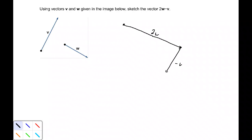Now the vector 2w minus v will begin where 2w began, at that initial point, and will end at the terminal point of minus v. And that is our vector.